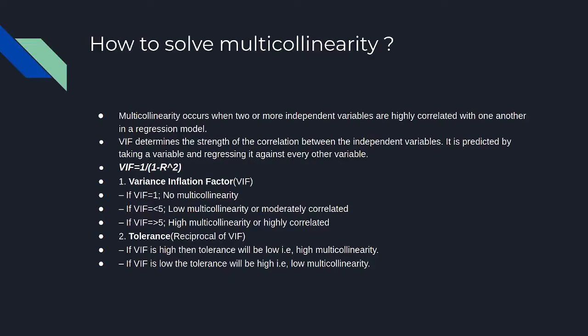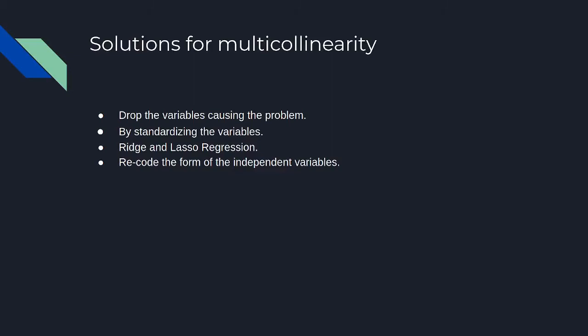Next question: what is multicollinearity and how to solve it? Multicollinearity occurs when two or more independent variables are highly correlated with each other — it is a very common problem in regression. You can leverage the Variance Inflation Factor (VIF), which is calculated as 1 divided by (1 minus R-squared). When VIF is less than five, it means low or moderate collinearity; when VIF is high, there is high collinearity. The reciprocal of VIF is tolerance — high VIF means low tolerance. To solve it, you can drop variables, standardize them, or use Ridge and Lasso regression.